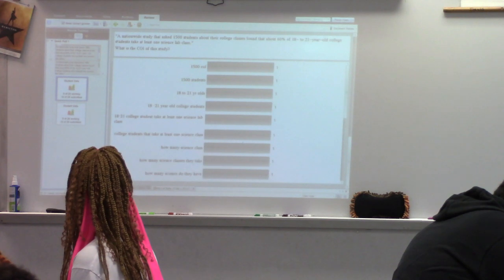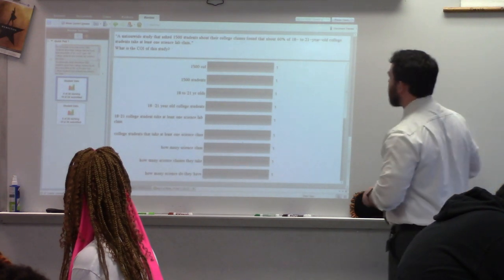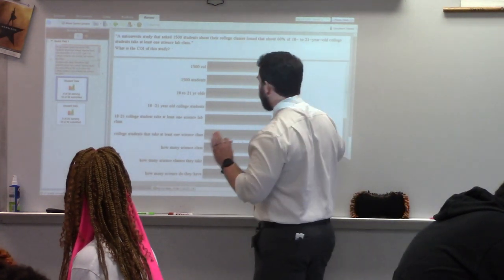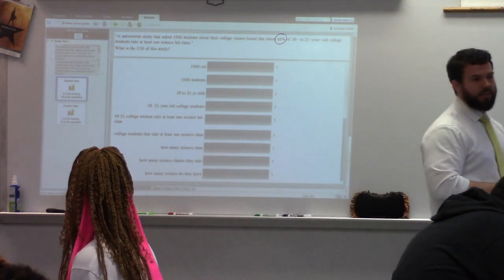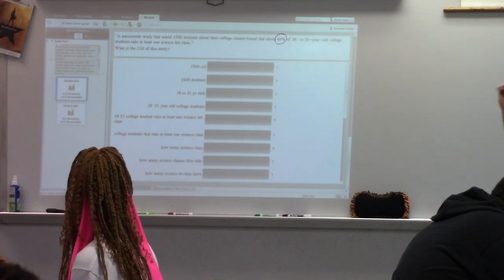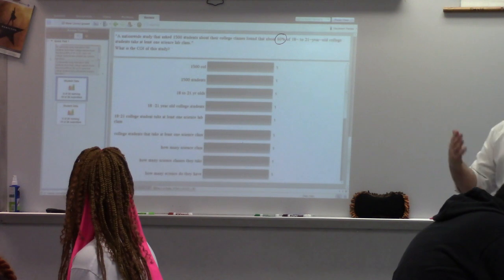So, it is the percent of college students, or 18 to 21-year-old college students, who took at least one science class. I need you to pay attention, though. This is something that a lot of students mess up every time. I see people try to use that 60%, or something like that. But think about that 60%. Did you know that 60% before you did the study, or is that what you got as a result of the study? That's as a result of the study. That is the statistics. That is the result of the study. That is not the sample. That is not the population. That's not the characteristic of interest.